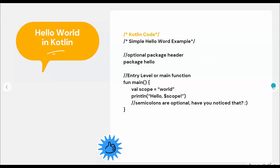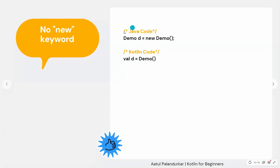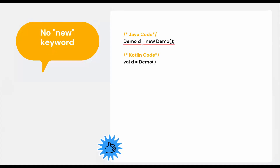There is no 'new' keyword in Kotlin. In Java, to create an object of class Demo you write 'Demo d = new Demo()' — the 'new' keyword allocates memory. But in Kotlin, you don't need the 'new' keyword. You simply write 'val d = Demo()' — just call the constructor directly and you can create the object without 'new'.